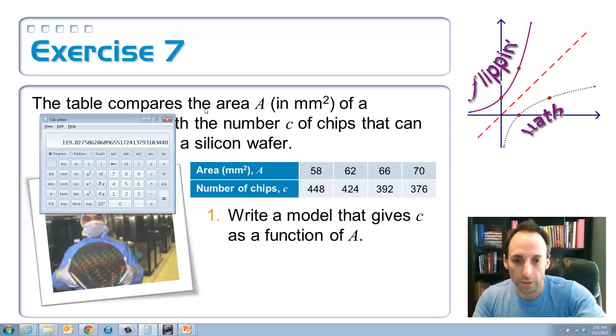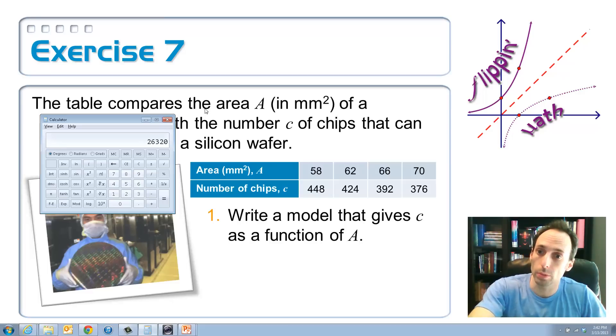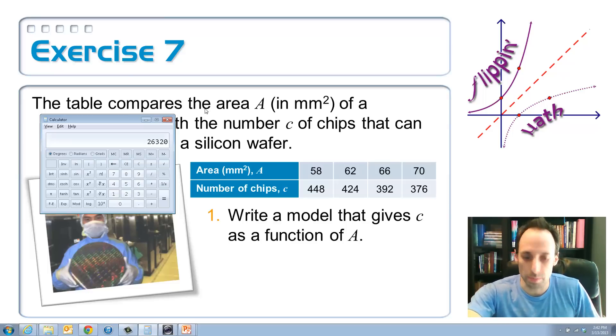Clear all this out. So, not divide, multiply them. So, how about 58 times 448. I get 25,984. Okay, the next one, 62 times 424. 26,288. The other one's about 26,000 also. Next one, how about 66 times 392. 25,872. Also around 26,000. Last one, 70 times 376. Also around 26,000. So, we're going to say, again, for this real world problem, I don't get exactly the same constant variation, but it's approximately 26,000.